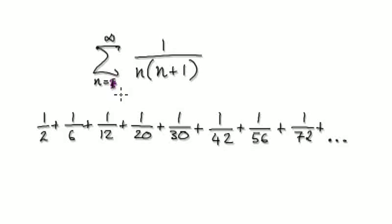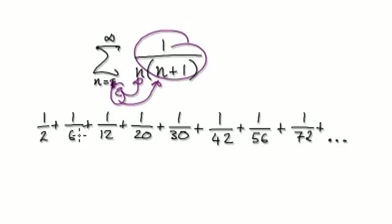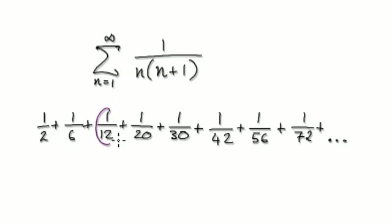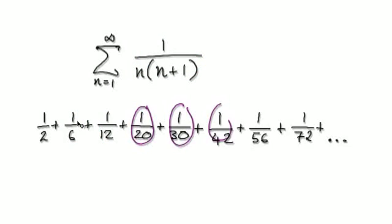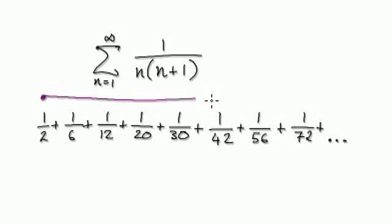When n equals 2, put it into here and this whole thing here will give you this. When n equals 3, it will give you this. When n equals 4, it will give you this, and so on. How would you go about summing up all the terms from the first term all the way to infinity?